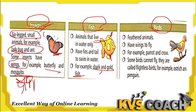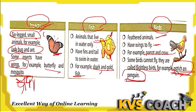Birds have feathers and wings to fly. Examples are parrot and crow. Some birds cannot fly — they are called flightless birds. Ostrich and penguin are birds but they cannot fly. Did you know the ostrich egg is the biggest egg in the world?